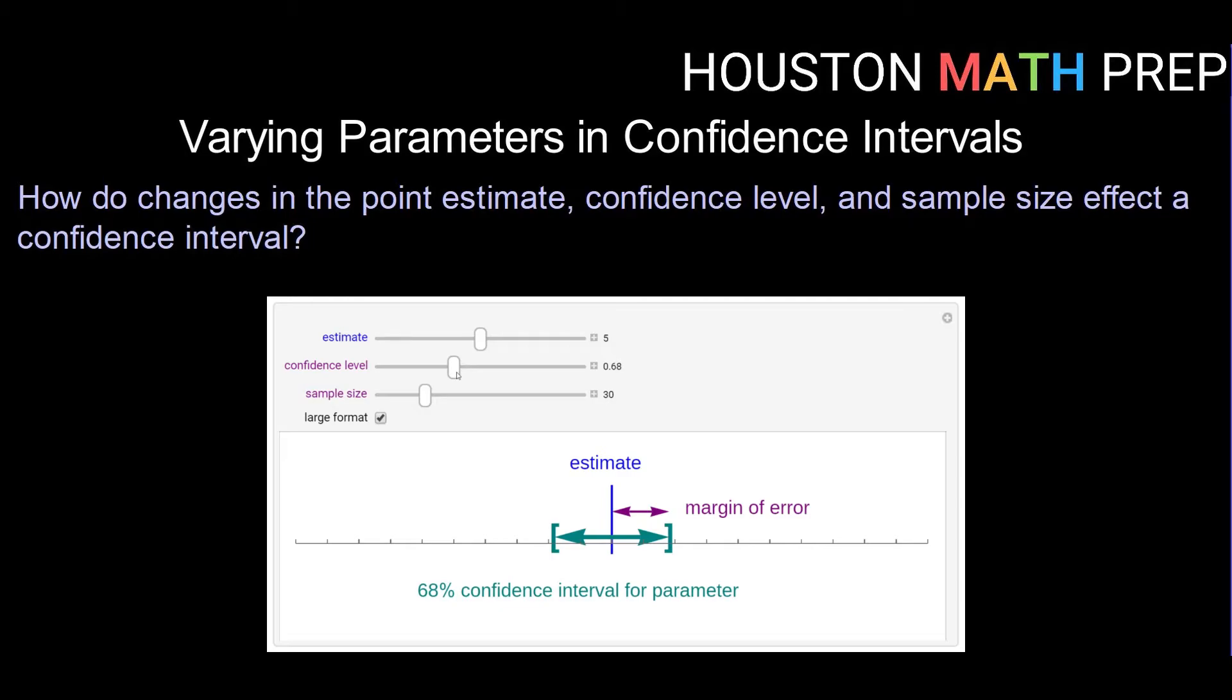And of course those same statements can be made about our margin of error. As we become more confident, we have a larger margin of error. And as we become less confident, we have a smaller margin of error. Okay, so I'm just going to reset this back to a 90% confidence interval.